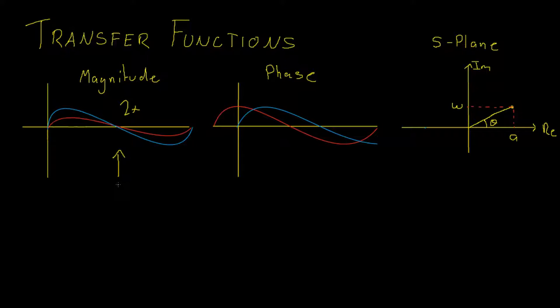However, these systems not only change the magnitude of our signal, but also change the phase of our signal. Now, the phase of a signal can be thought of as a delay without changing the signal itself. For instance, if we had our red input signal here, our blue output signal has the exact same shape, however, it's been delayed slightly.